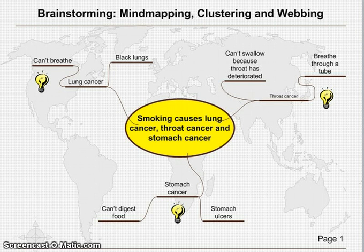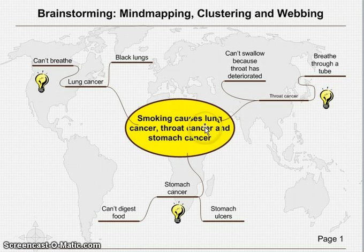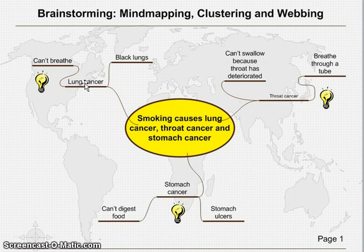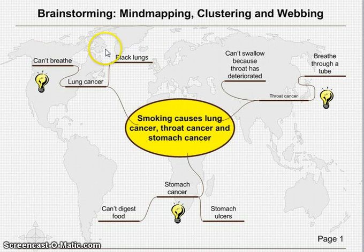One way to organize my thoughts is to use mind mapping. I would put the main topic or main idea in a central circle. In this case, smoking causes lung cancer, throat cancer, and stomach cancer. Then I would write about the different aspects of smoking. So in this main idea, I address the fact that smoking causes lung cancer — that's going to be its own paragraph. What happens when you have lung cancer? You can't breathe, you have black teeth, you have black lungs.